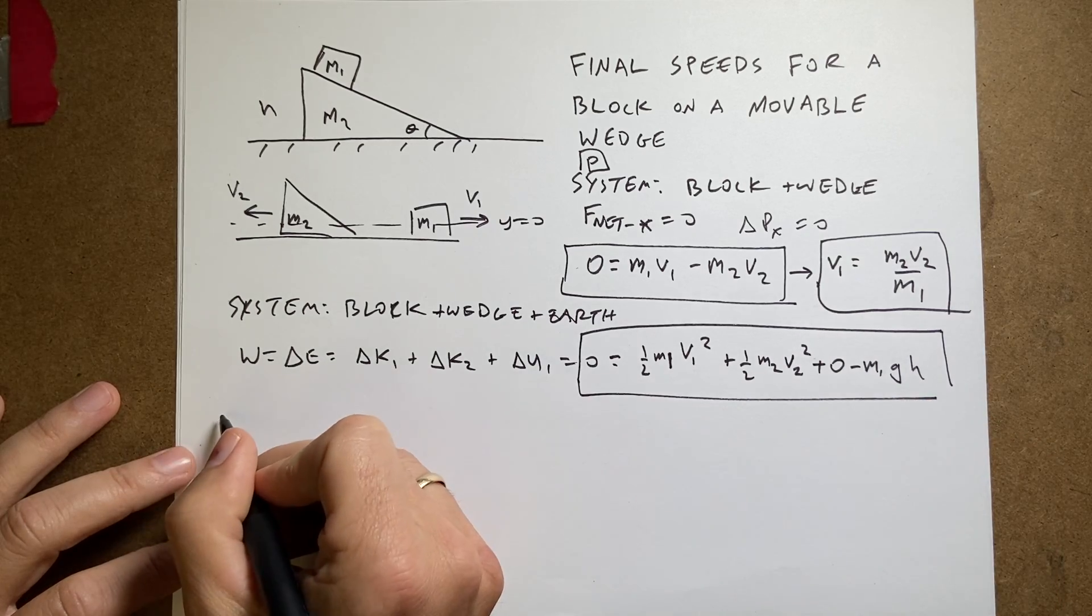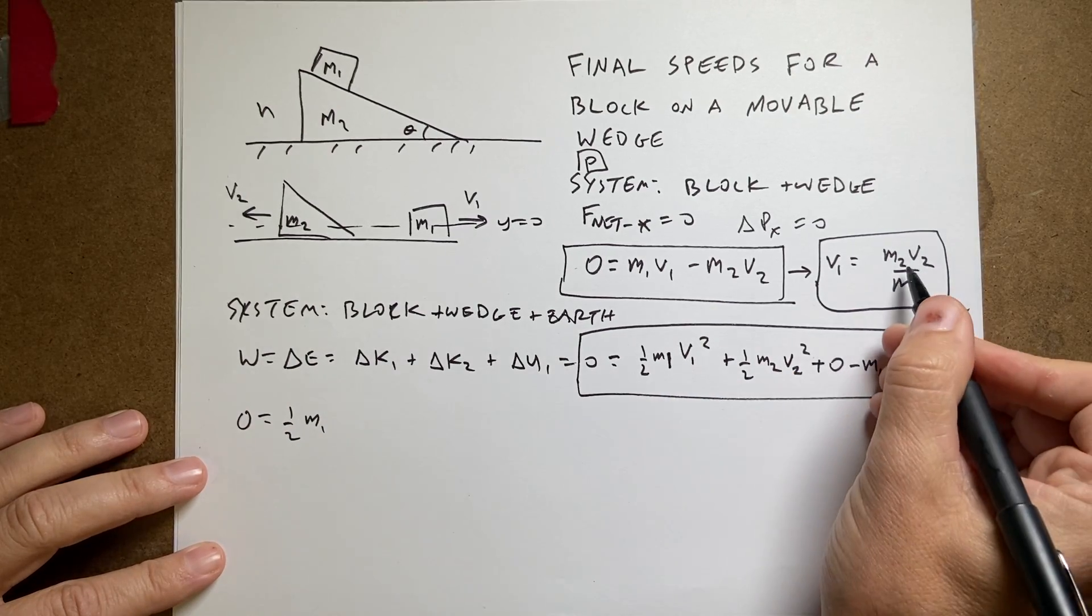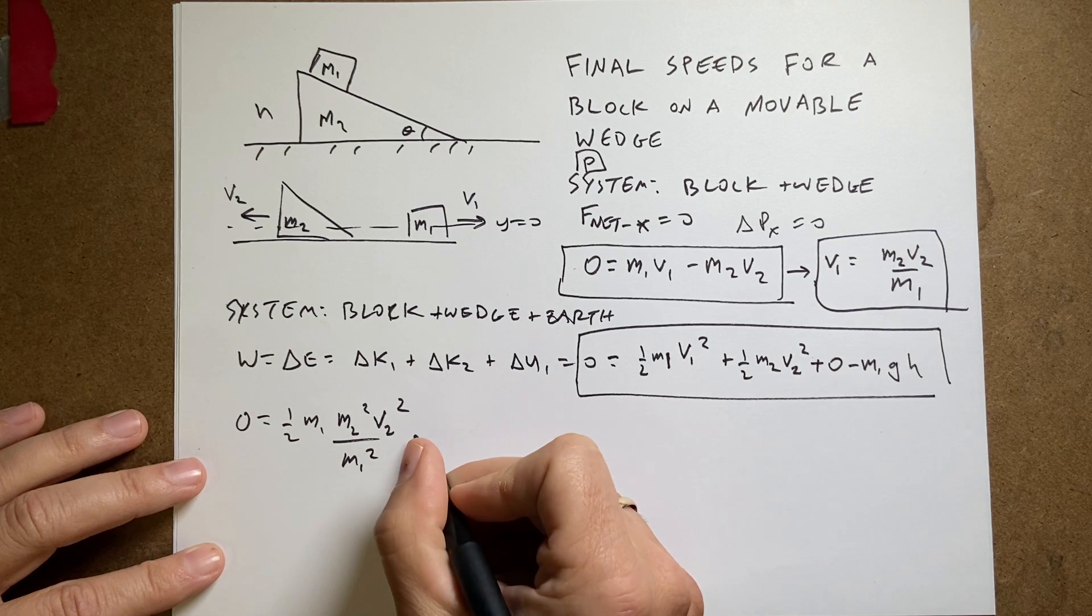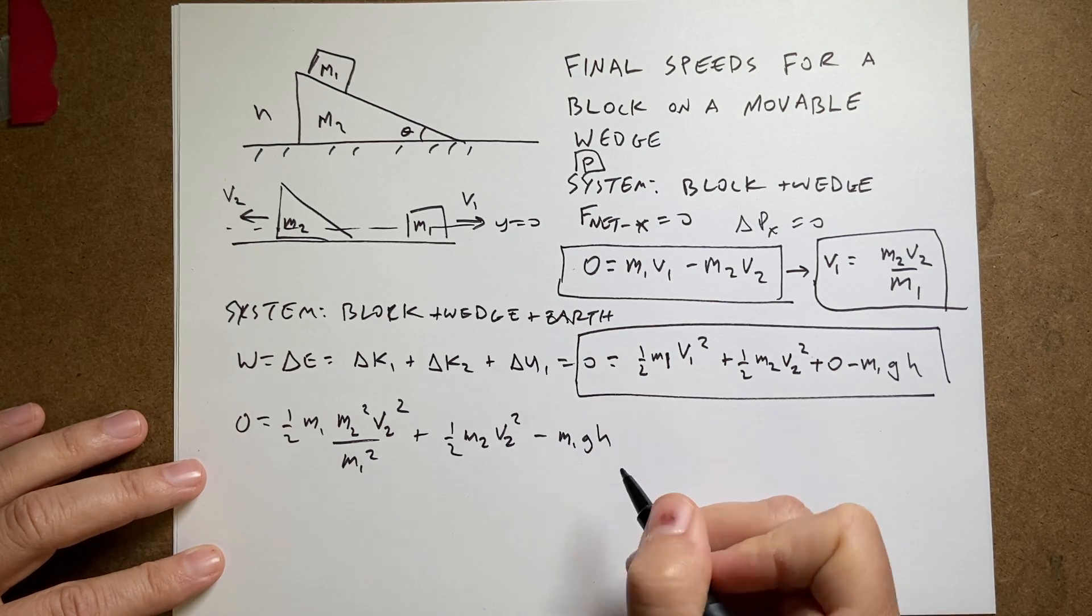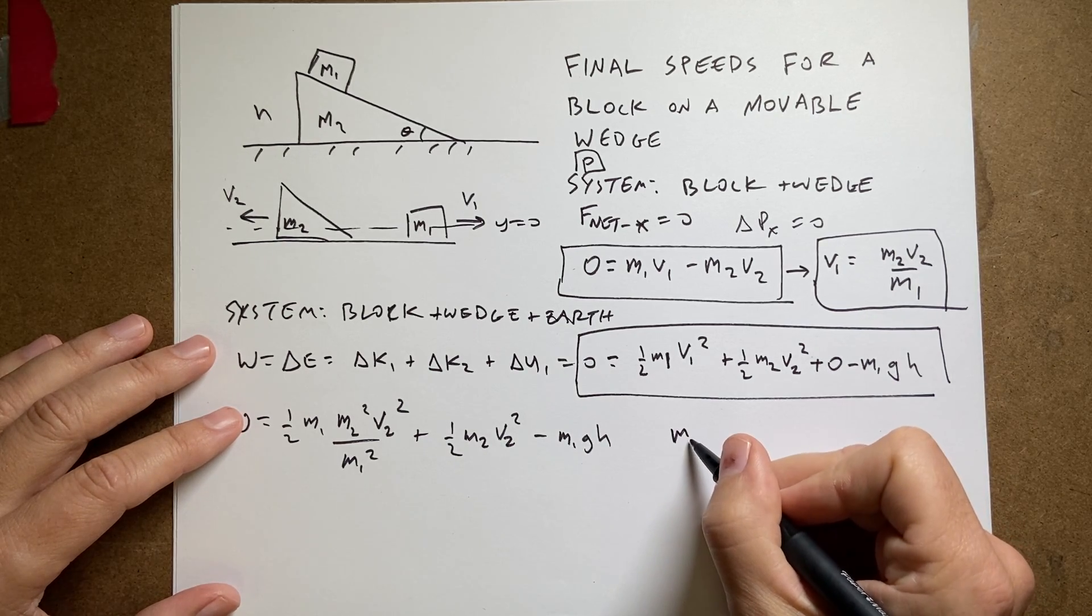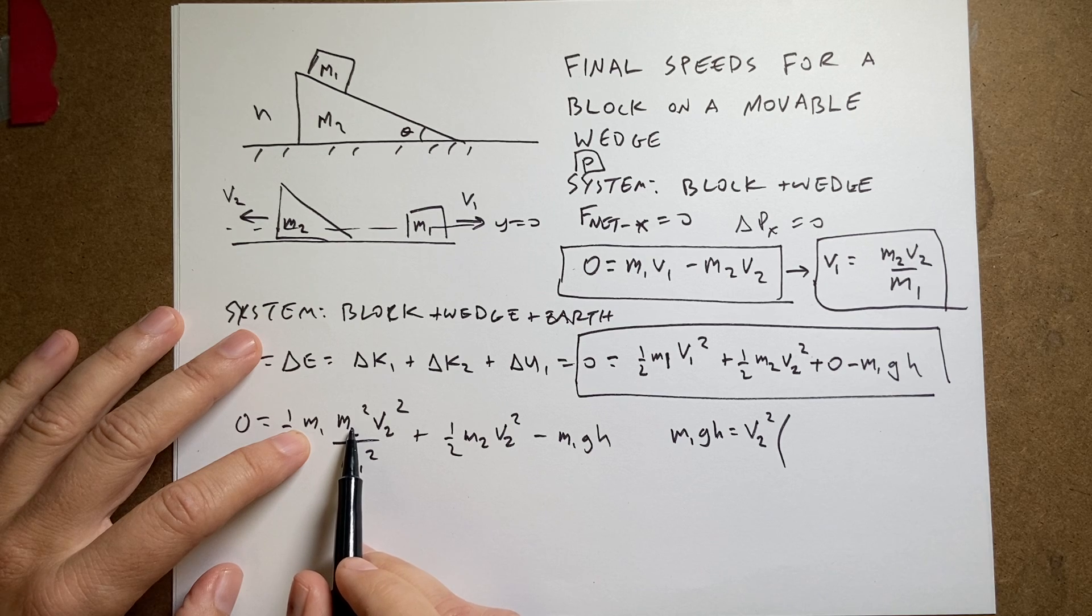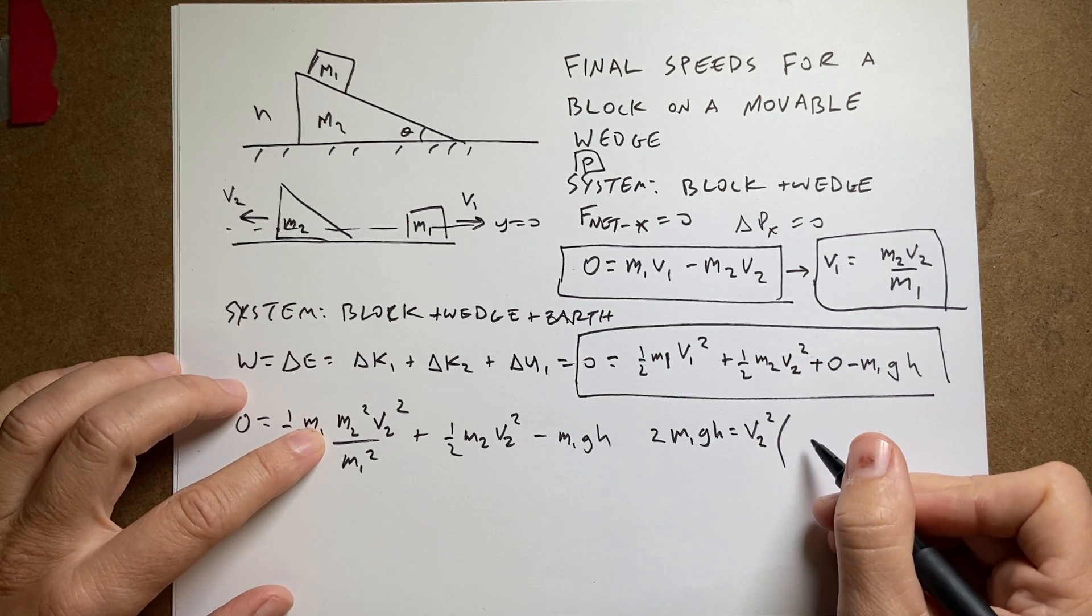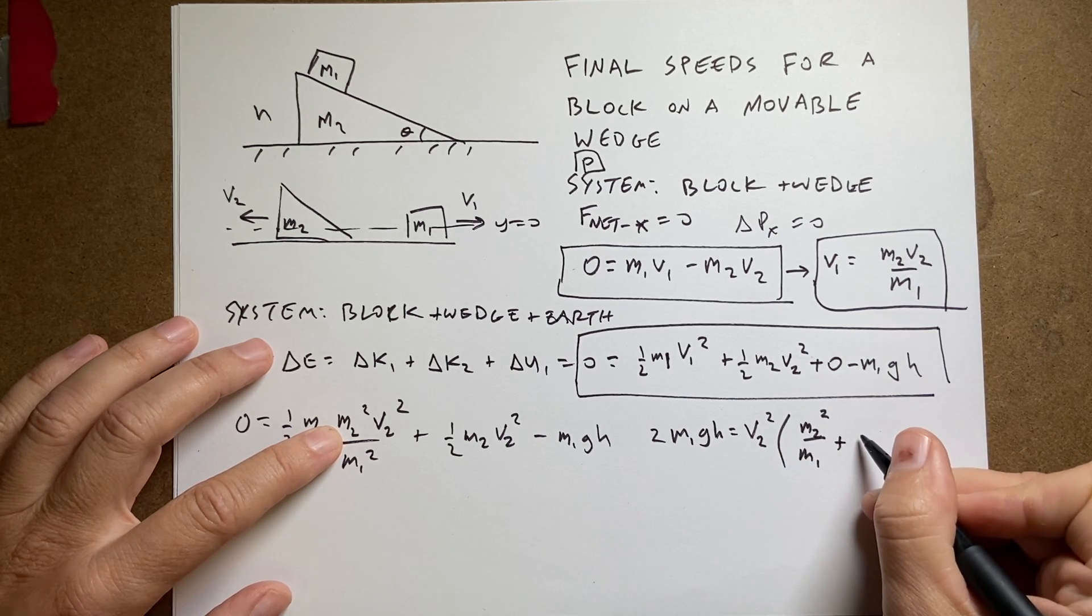V1 is going to be equal to M2 V2 over M1. So what I did was I added this to both sides and then I divided by M1 to get that. And I skipped some steps but I figured we're all adults here. Or at least I like to pretend like I'm one. Sometimes I pretend like I'm not. So now I have V1. I can plug it in down here. So I get, let's just plug it in. 0 equals 1 half M1. V1 squared is going to be this. So it's going to be M2 squared V2 squared over M1 squared. And then I have plus 1 half M2 V2 squared. And then I have minus M1 GH.